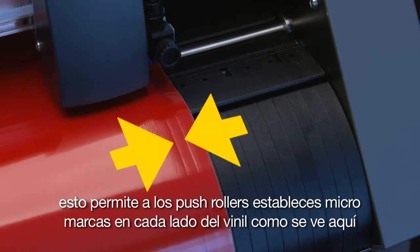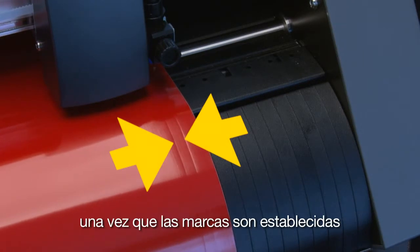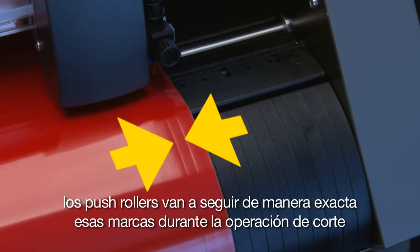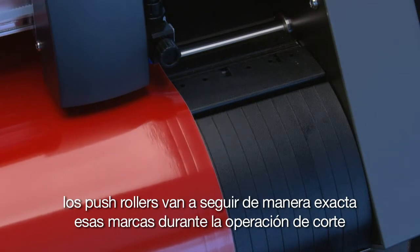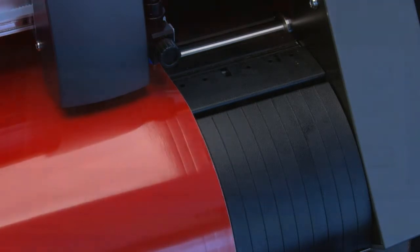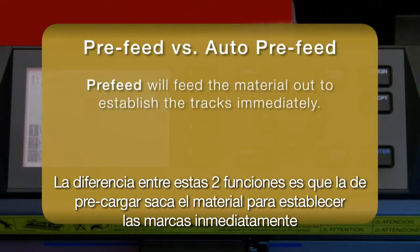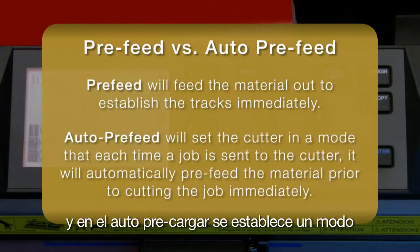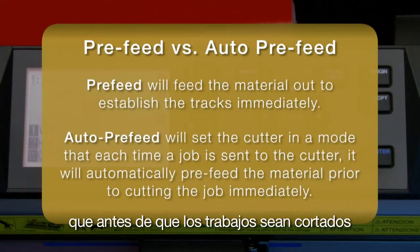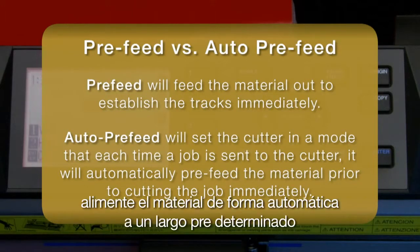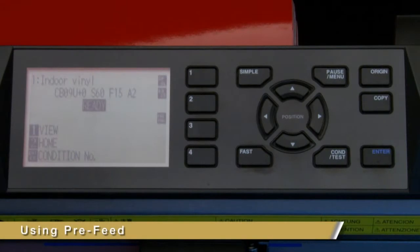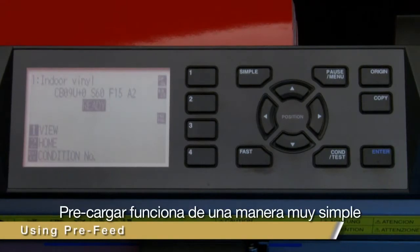What these functions essentially do is they will feed the material prior to cutting the job. This allows the push rollers to establish micro tracks on each side of the vinyl. Once these tracks are established, the push rollers will accurately follow these tracks during the cutting operation. The difference is that pre-feed feeds out the material to establish the tracks immediately, whereas auto pre-feed sets the cutter in a mode that will automatically pre-feed the material to a predetermined length prior to each job.